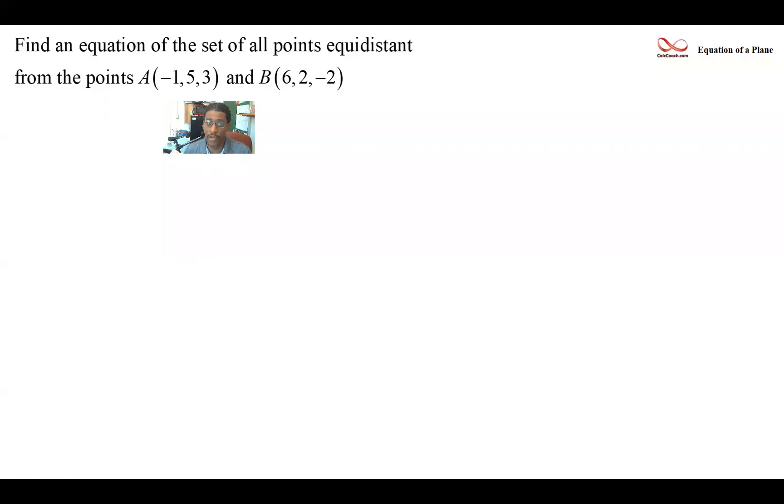Find an equation of the set of all points equidistant from two points, point A and point B. Two points in space, we need the set of all points equidistant from those two points. The visual is necessary here.